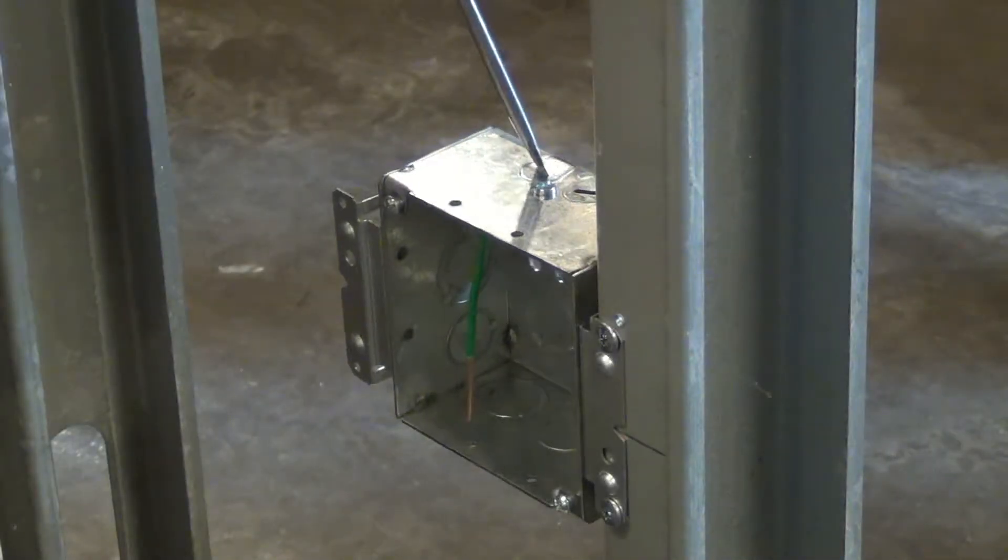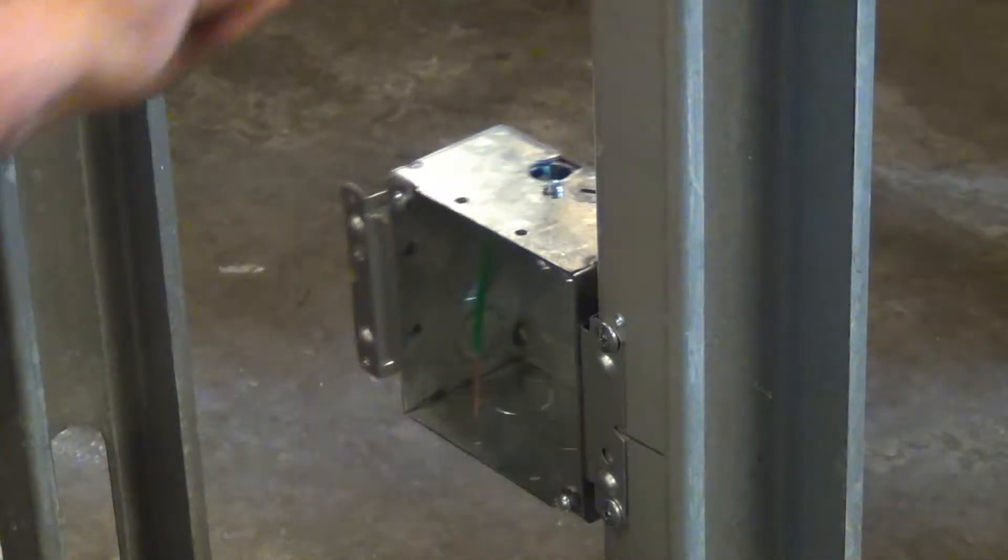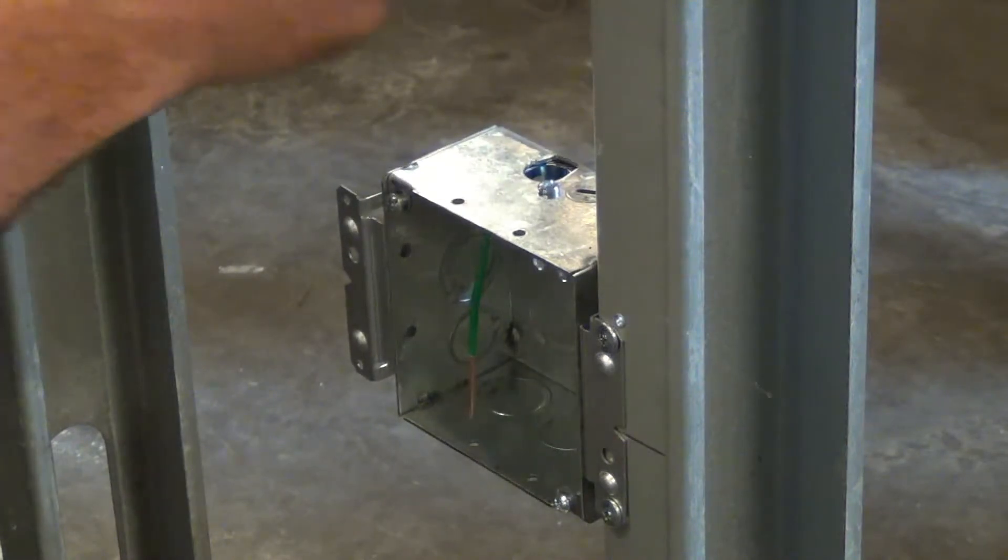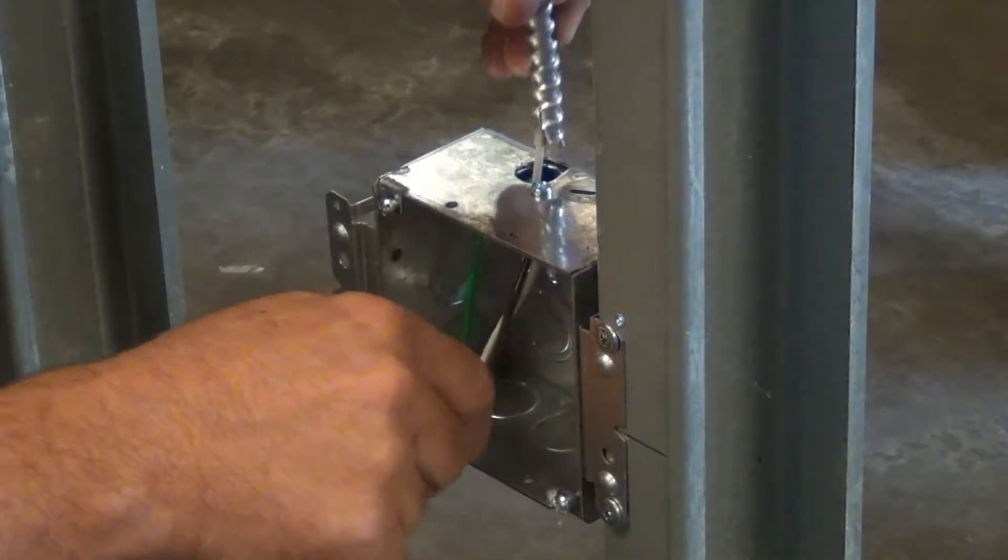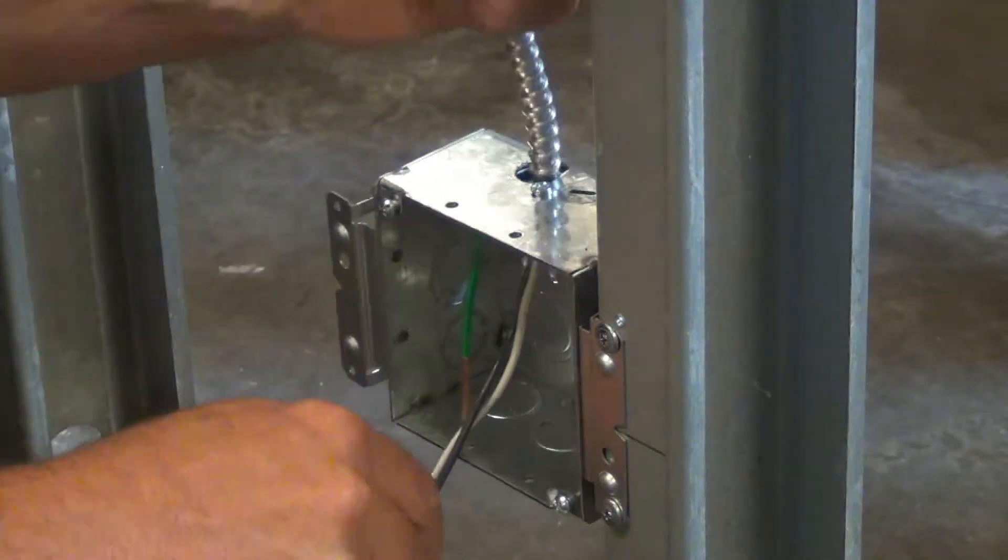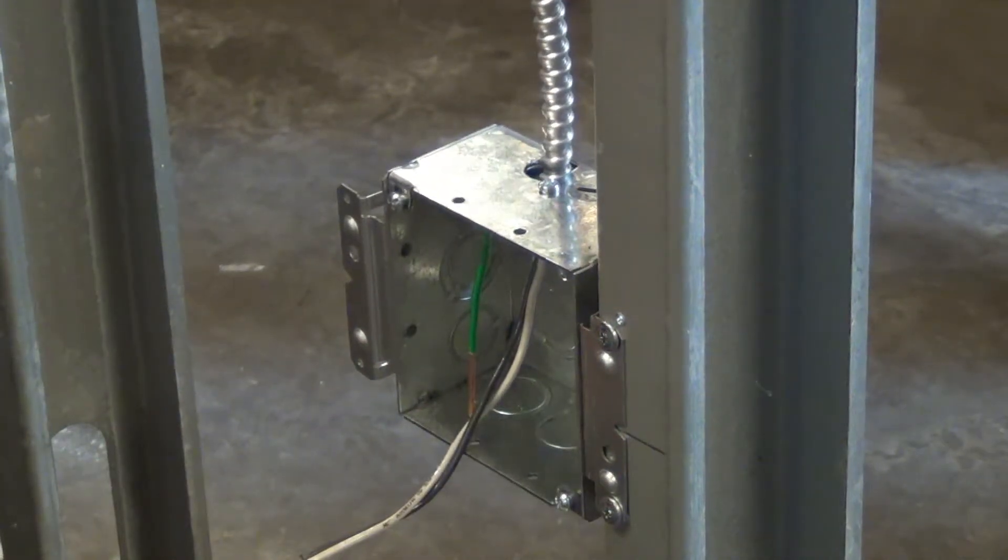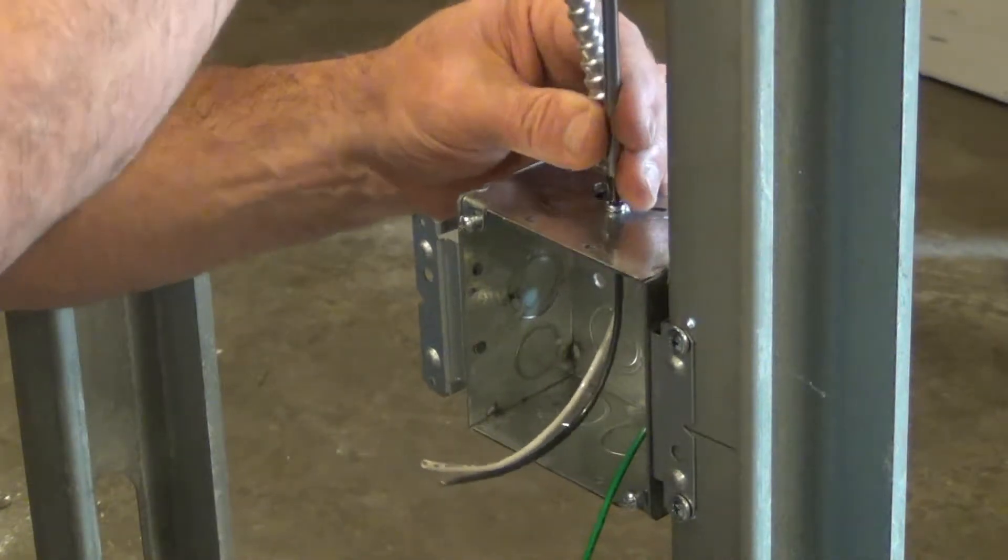To use a STAB-IT box, first remove one of the pear-shaped pry-outs. Second, with the cable already stripped, run the loose wires through the open pry-out and into the box. Lastly, just push the cable into the connector until you feel it lock into place.